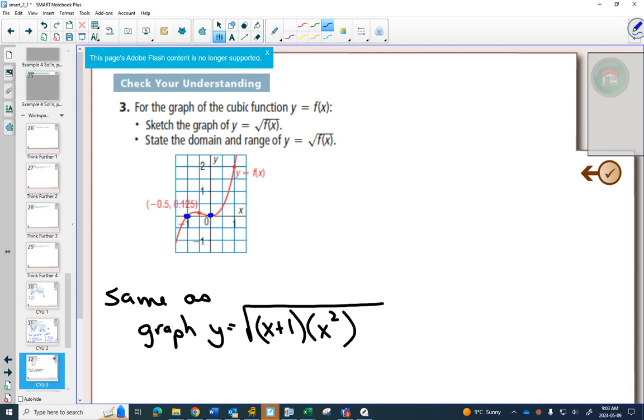And this is the graph that's given. So first of all, if it was given this way, you would have to graph the inside first and then square root. Okay? So let's say we drew the graph, we get the red graph drawn there.